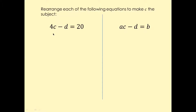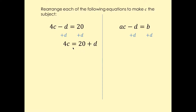In this question, we've got 4c minus d, and we want to make c as a subject. So move d to the other side first — that's plus d on both sides, and d is going to cancel. So you're left with 4c equals 20 plus d. And here: ac equals b plus d. You have to cancel 4 from here, so divide by 4 on both sides.